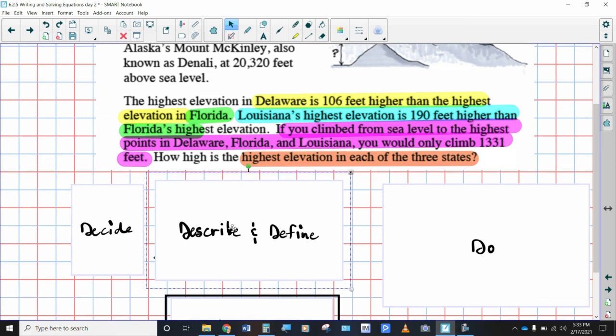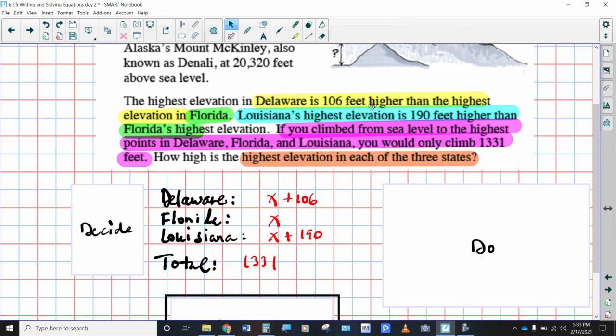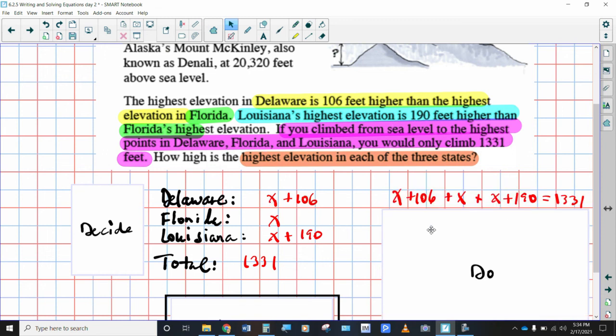So what do we have here? We've got Delaware is 106 feet higher than the highest elevation in Florida, and Louisiana is 190 feet higher than the highest elevation in Florida. So both of these are being compared to Florida. So I'm going to make Florida my X. Delaware would be X plus 106, and Louisiana would be X plus 190. When you add all of them together, you get 1331. So let's take X plus 106, that's the Delaware highest elevation, plus X, which is the Florida, plus X plus 190, which is Louisiana, and add all those together by combining like terms, and you would get three X's plus 296 is equal to 1331.